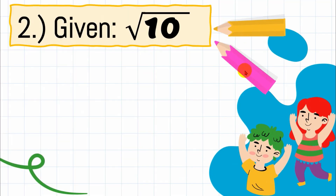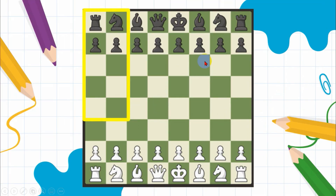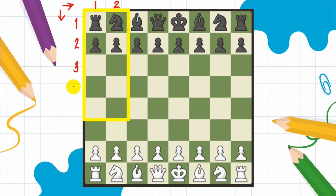Let's proceed to question number two: what are the factors of the radicand? Going back to the chess board with our 10 squares, let's count the squares going to the right — one, two. Then count the squares going down — one, two, three, four, five. So two times five gives us the answer of 10.